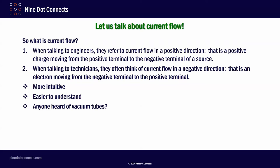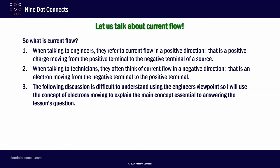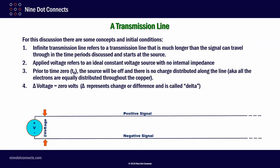When talking to technicians, they often think of current flow in a negative direction. That is, an electron moving from the negative terminal to the positive terminal. It's more intuitive. It's easier to understand. Now, I had an interesting conversation one time in my class when I was getting my double E. A very smart professor was talking about hole theory and the holes traveling. During the conversation, I asked him, I said, well, if holes are what's moving, then how do you explain how a CRT works? And he said, okay, you're right. Yes, the electrons are moving from the cathode to the plate. And that's when he explained to me that it all had to do with the polarity of the equations. And that's why electrical engineers keep it that way. Anyhow, the following discussion is going to be difficult to understand if we use the engineer's viewpoint. So, I will use the concept of electrons moving to explain the main concept essential to answering the lesson's questions.